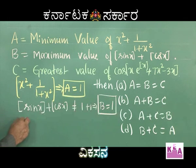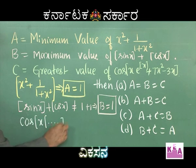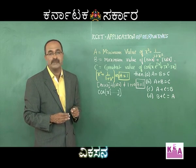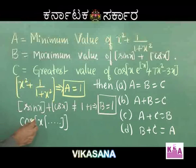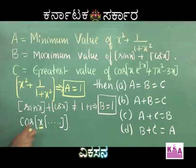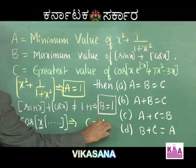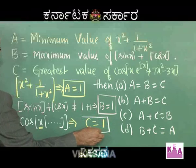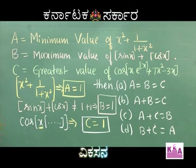C is the greatest value of cos(x · (eˣ + 7x² − 3x)). Can we take x common? The cos function has maximum value 1 only when its argument is 0 or 2nπ. So we can make x = 0. If x = 0, we get cos(0) because 0 times anything is 0. The value of C is also 1.